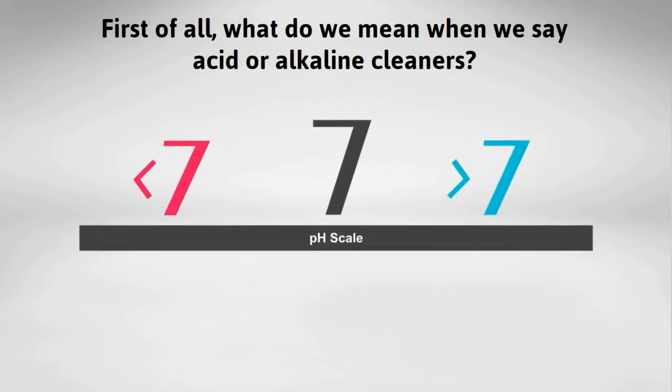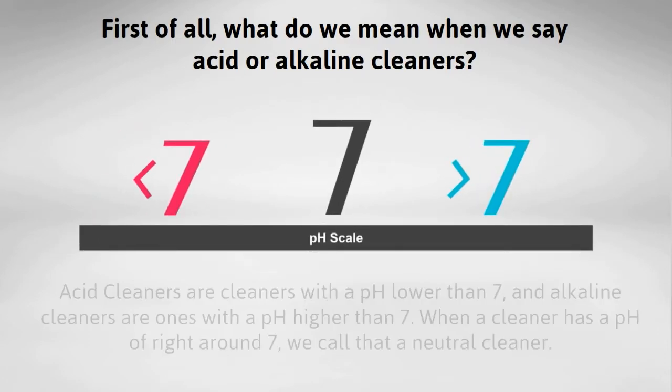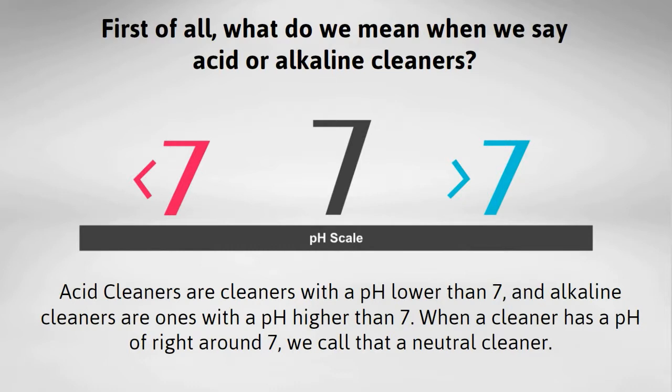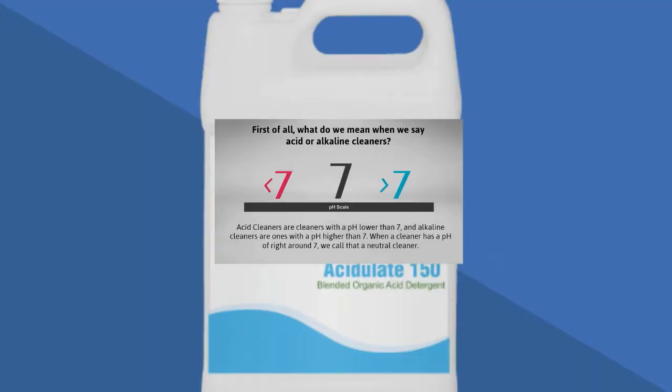When we use the words acid and alkaline, we're referring to the cleaner's place on the pH scale. Acid cleaners are cleaners with a pH lower than 7, and alkaline cleaners are ones with a pH higher than 7. When a cleaner has a pH right around 7, we call that a neutral cleaner.